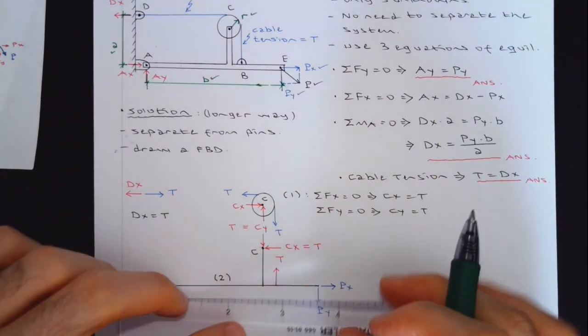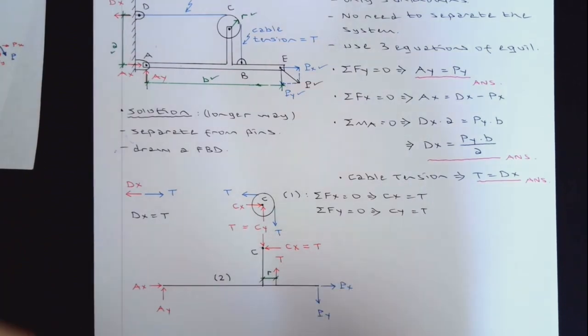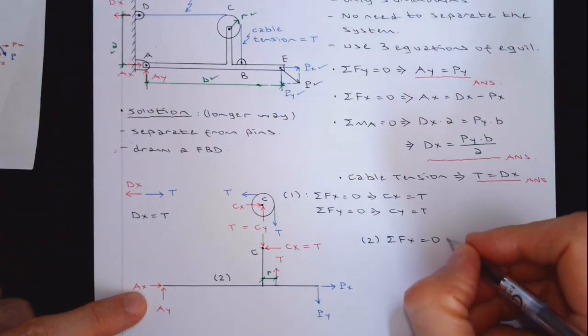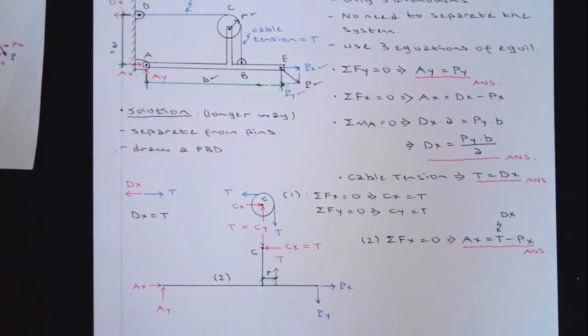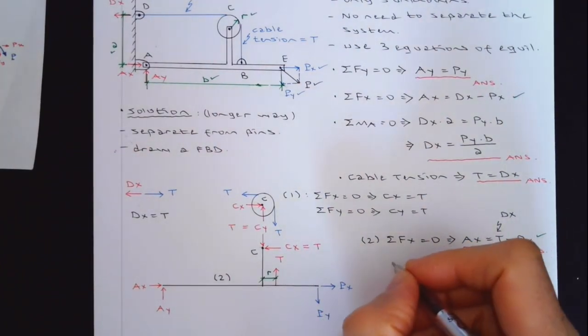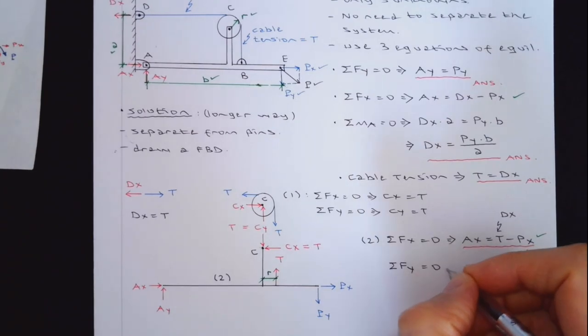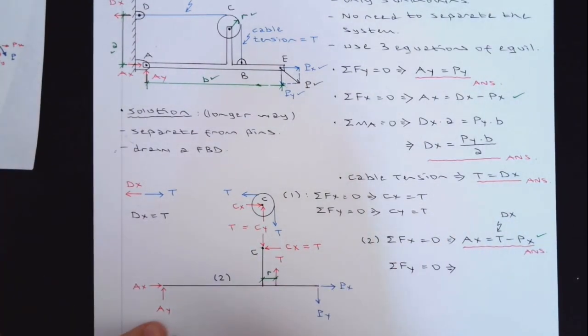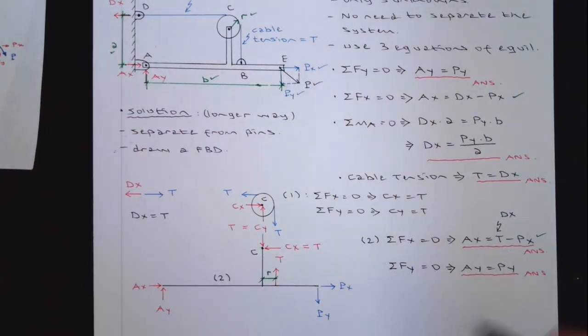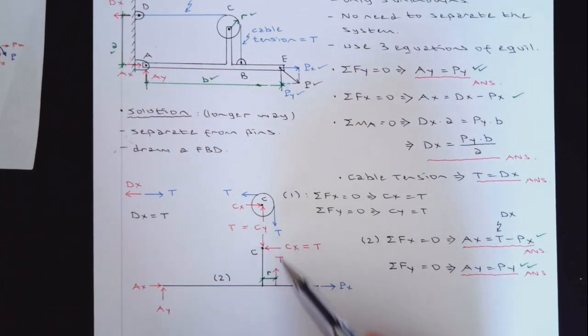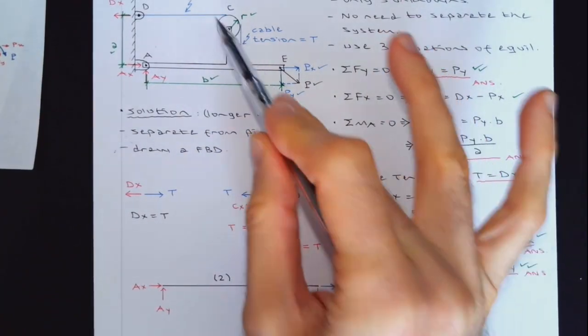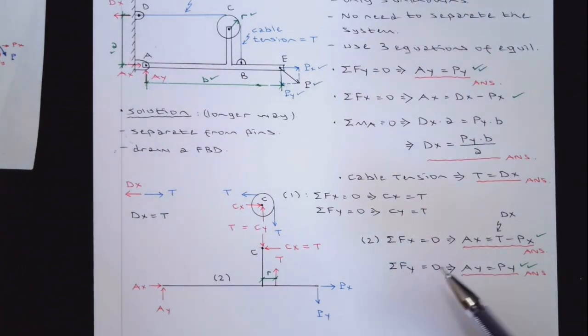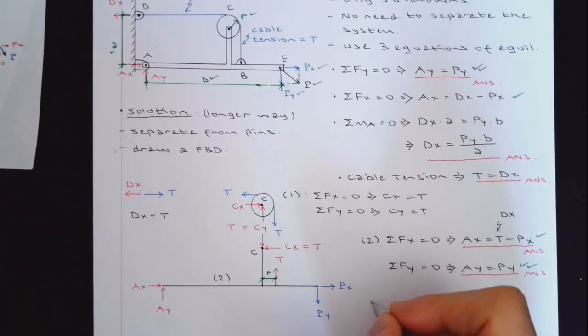Fx equal to zero. Cx would come out to be T. Then you would do Fy equal to zero. Cy would come out as you can write these down. This is going to be T. And this is going to be T applied at point C. You can also show it. This is the same T. And that is going to be the same as Dx. Dx equal to T. Looking at this part, you have to be careful with the dimensions. This is r. So let's start with Fx equal to zero. Ax would be the same as T minus Px. T is the same as Dx. Looking at this, we got the same equation coming from this.